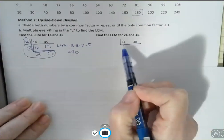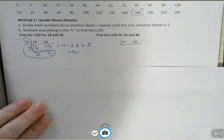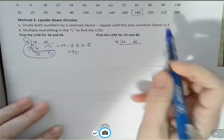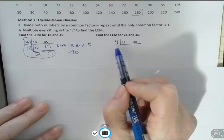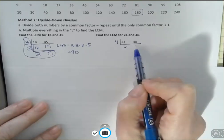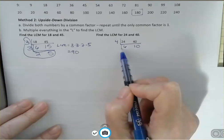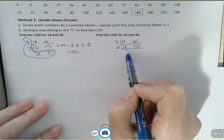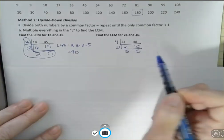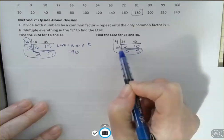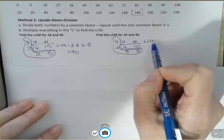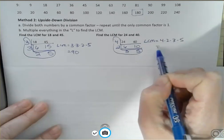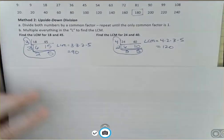What about 24 and 40? You might want to pause the video and try these. I can see that four goes into both: four goes into 24 six times, and four goes into 40 ten times. I could have seen eight, but that's okay — we'll just go another step. Two goes into six three times and into ten five times. Now there's nothing left in common, so I multiply everything in the L: four times two times three times five is 120. That's the LCM for 24 and 40.